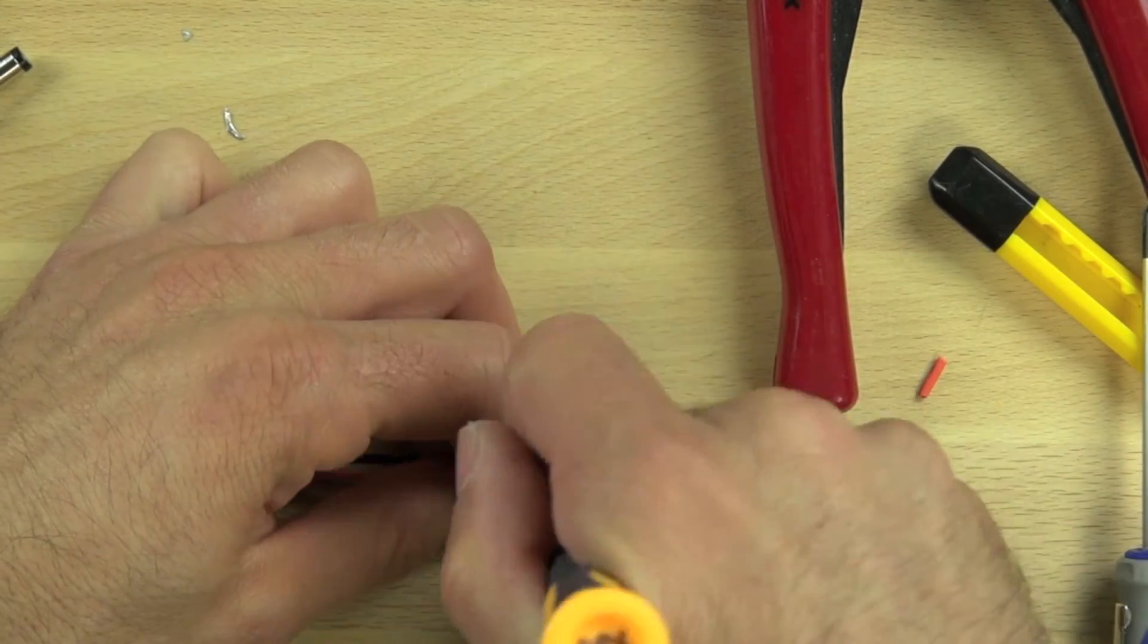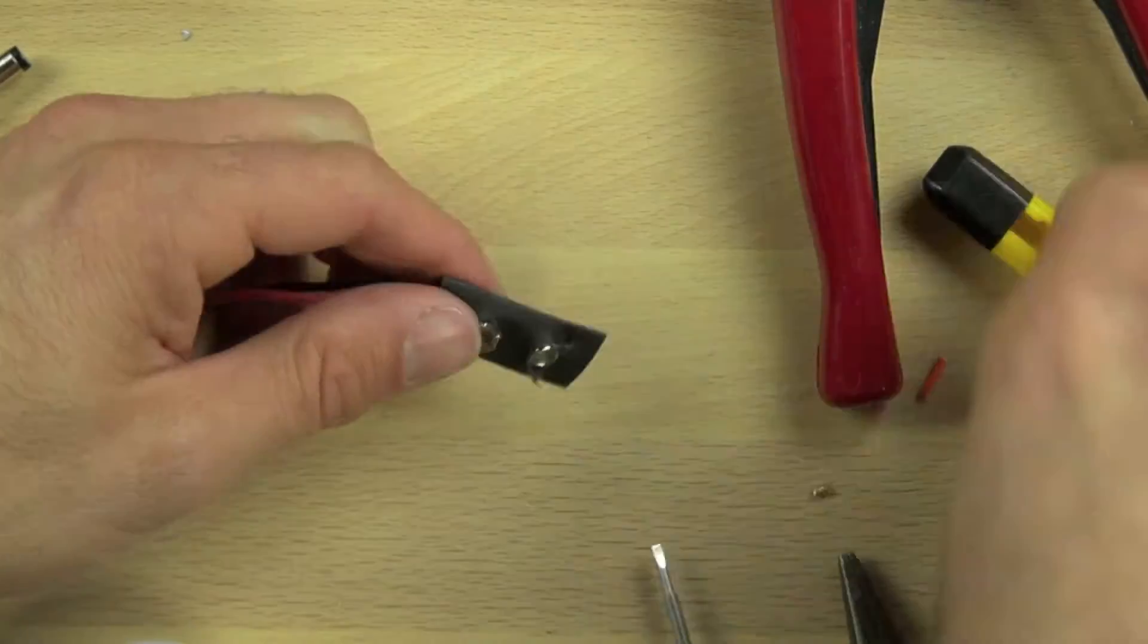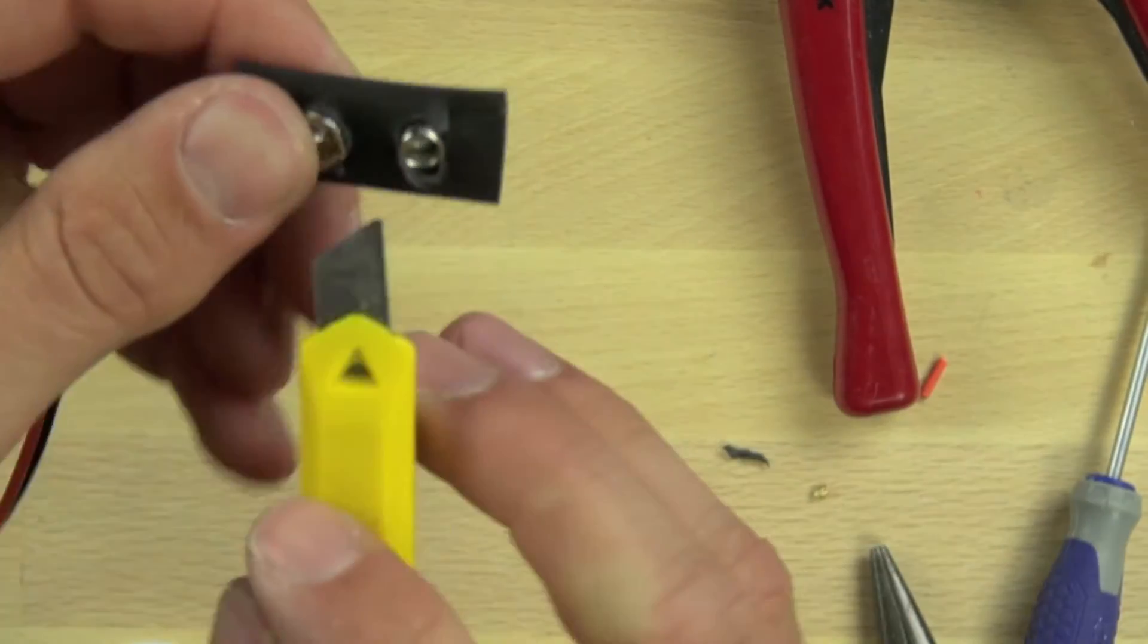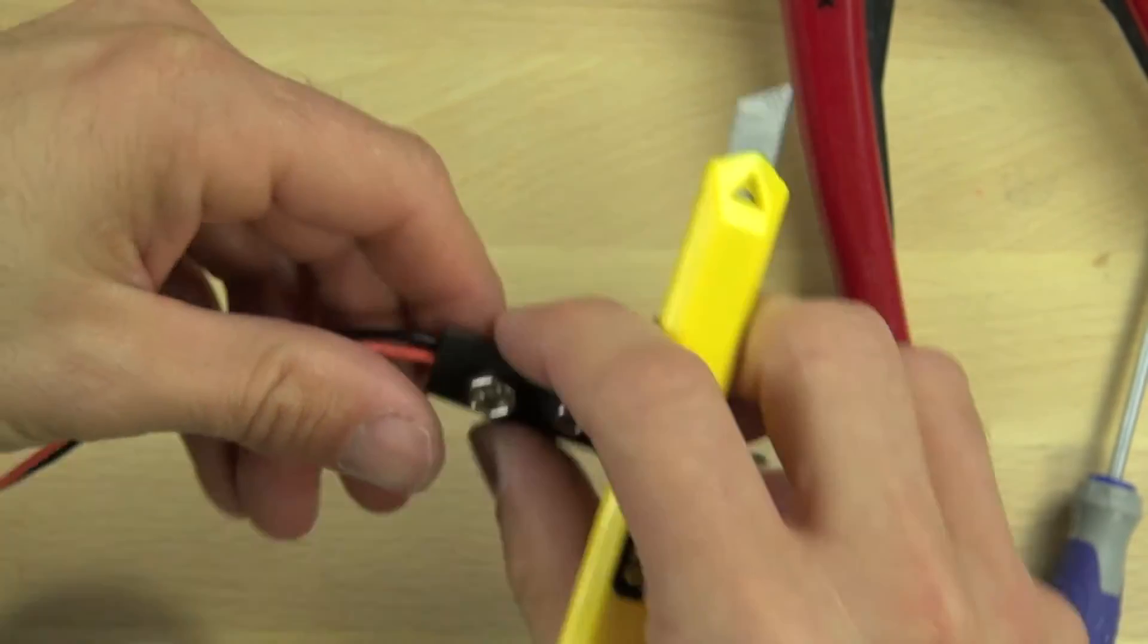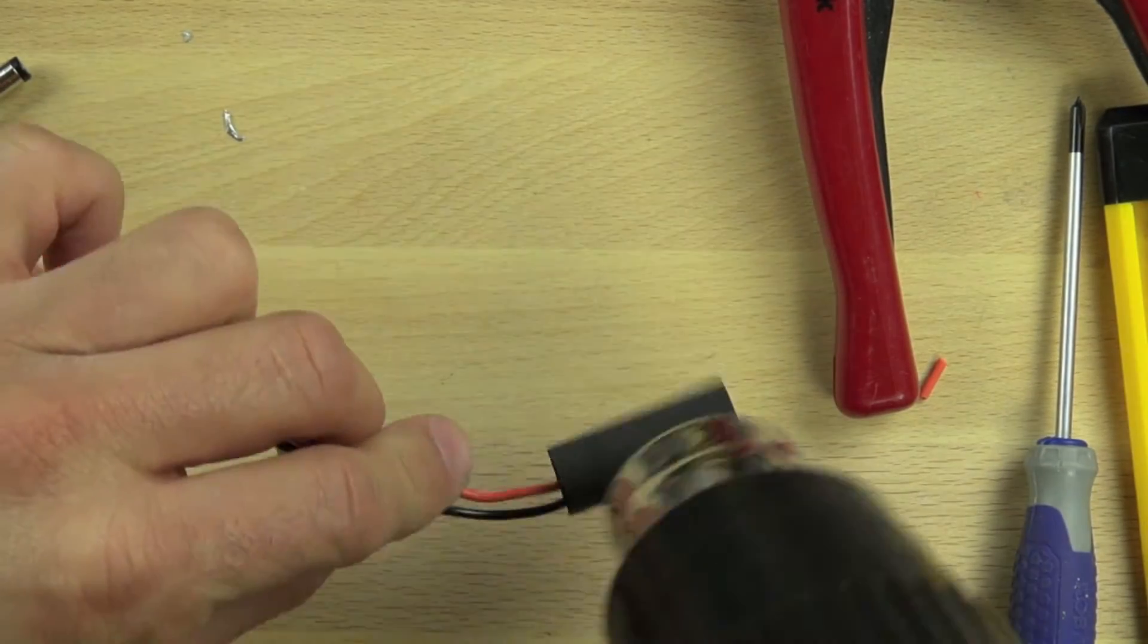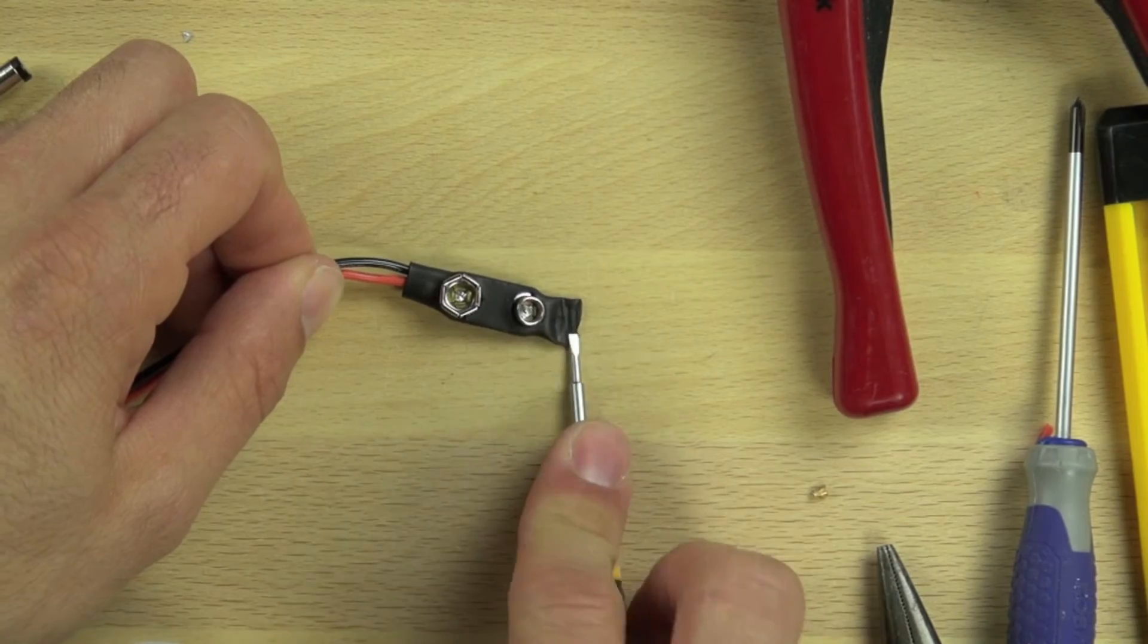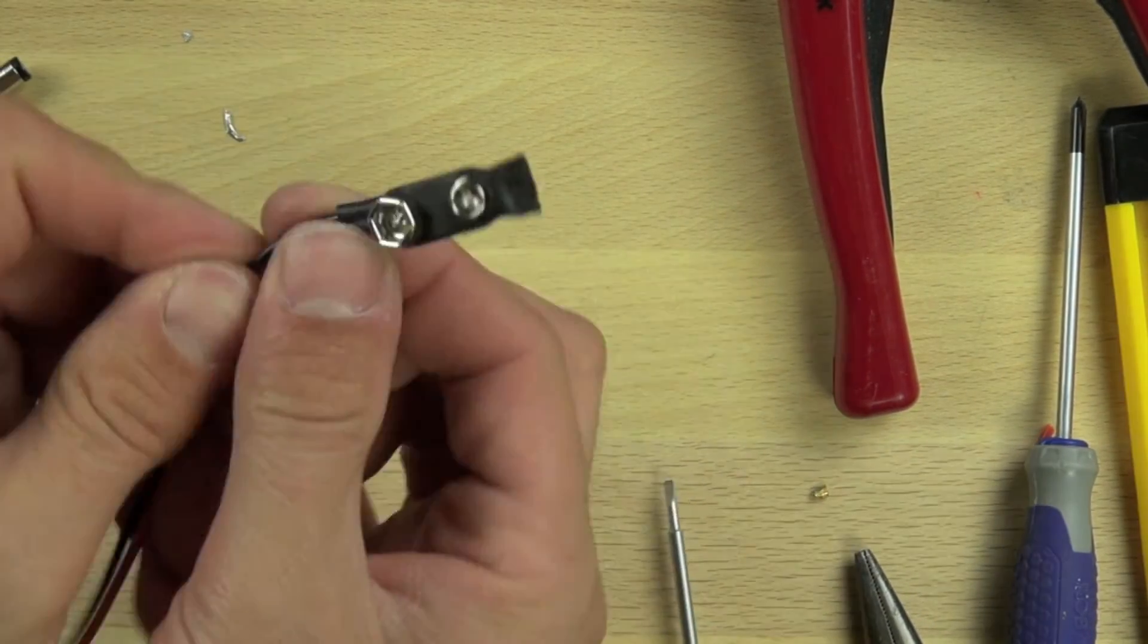Once we've got that pushed all around there like that, we'll do the other side. Then we're just going to trim off the excess with a break off blade knife. Then we'll take our heat gun and shrink the shrink wrap so that we have a nice tight connection that's not going to come apart. We'll just push the end together while the shrink wrap is still soft.